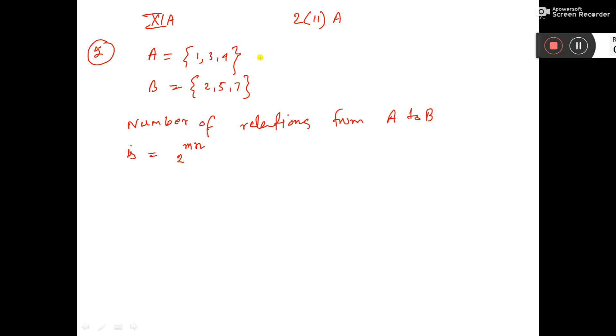Then what is m? m equal to the cardinal number of set A. So, m is equal to n of A. That means, how many elements are there in set A?